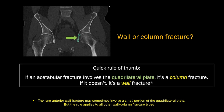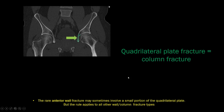There's a small asterisk: the anterior wall of the acetabulum is so small that to break it, you sometimes have to take a little bit of the quadrilateral plate with you. But otherwise, this rule applies to all other wall and column fracture types. So if you see a quadrilateral plate fracture, you know you're looking for a column fracture.